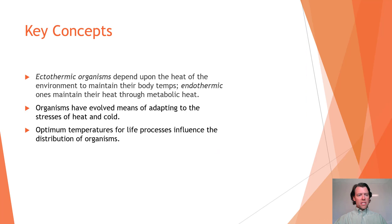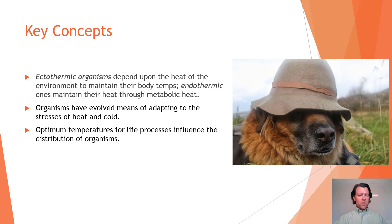Continuing key concepts, we're going to talk about ectothermic and endothermic animals. Ectothermic organisms depend on the heat of the environment to maintain their body temperatures, whereas endothermic organisms maintain their heat through metabolic heat production. Organisms have evolved various means of adapting to stresses of heat and cold, such as behavioral processes. Optimal temperatures for life processes influence the distribution of organisms.